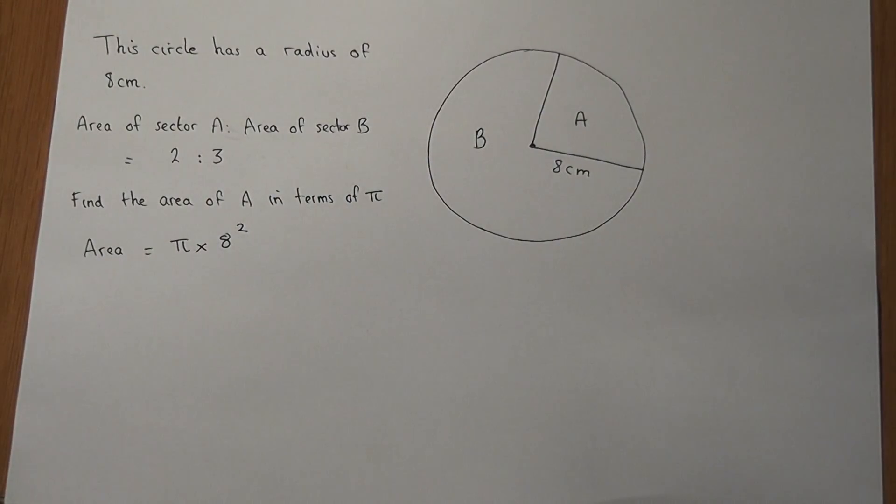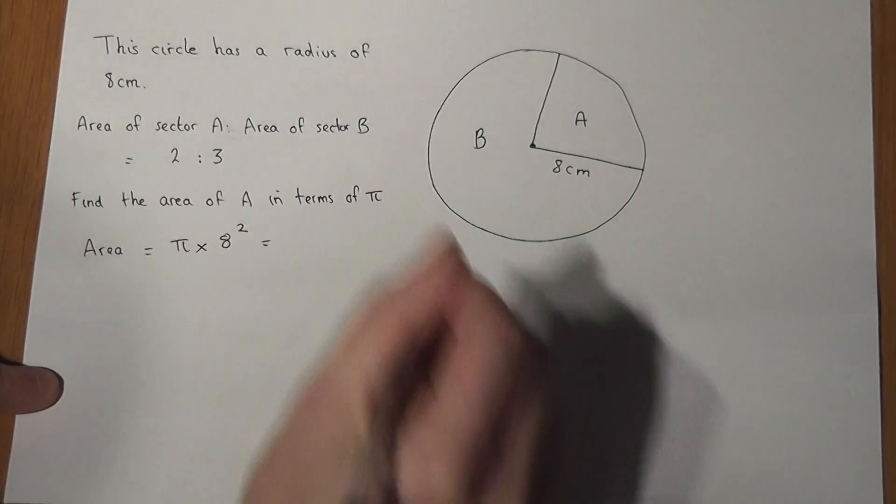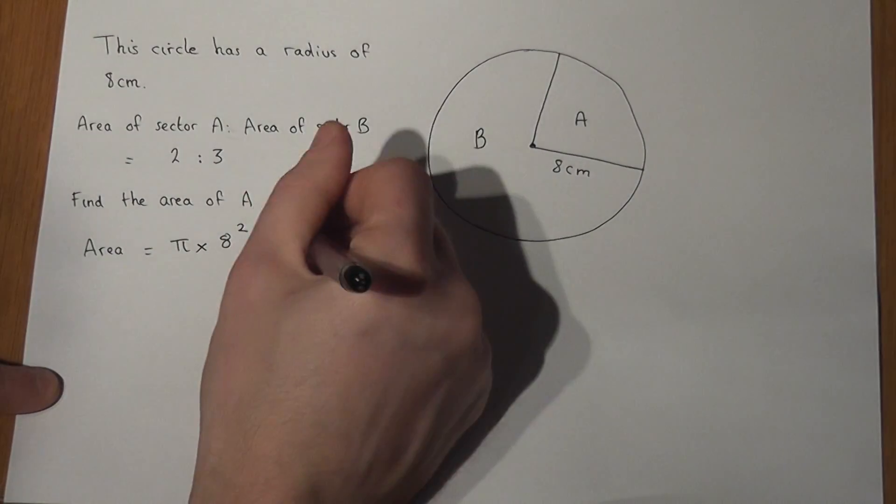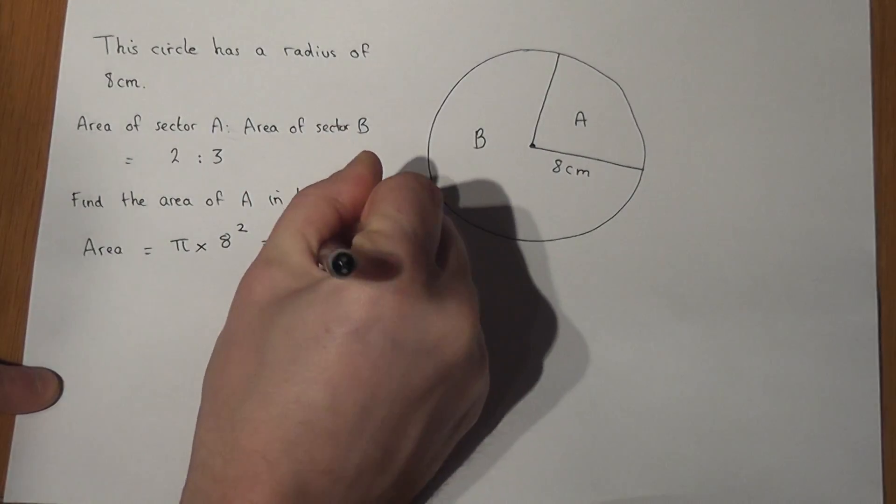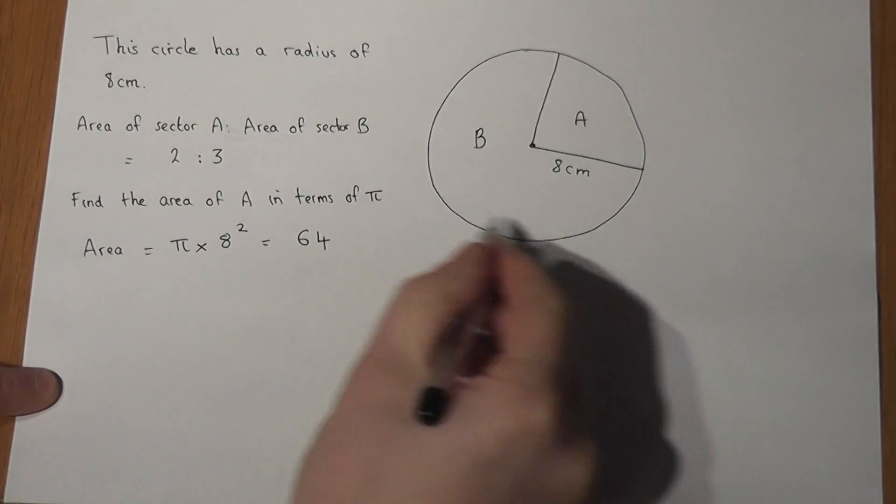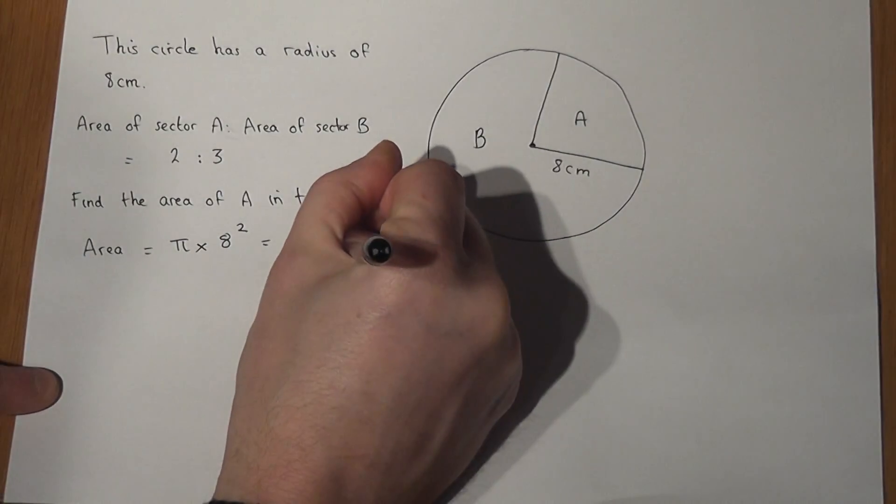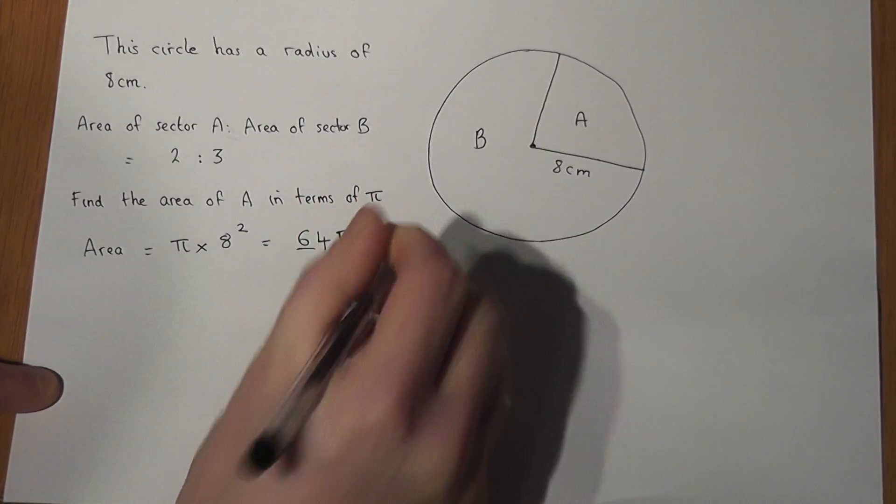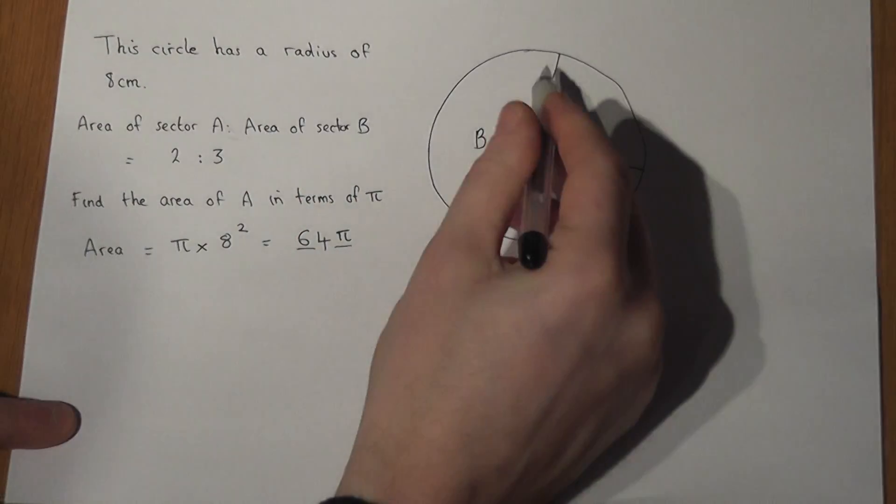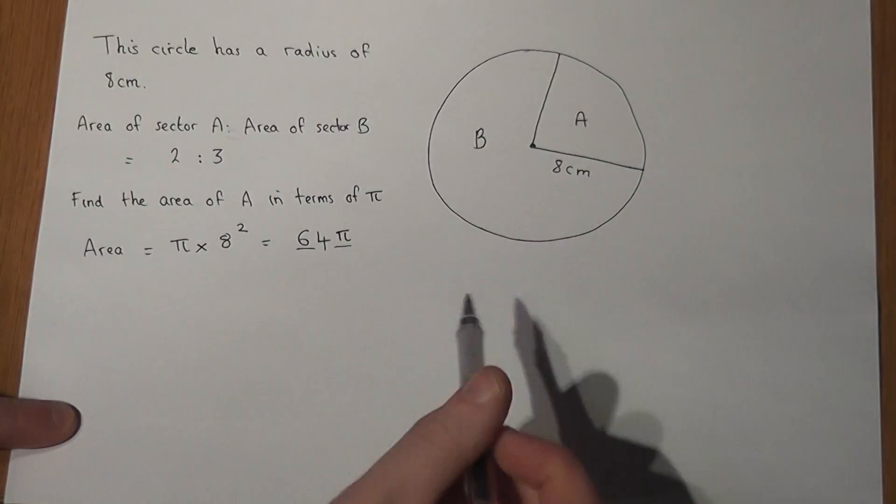If I do 8 squared I get 64, so in terms of π the entire area is 64 lots of π. However, my sector which is sector A is a section of that circle